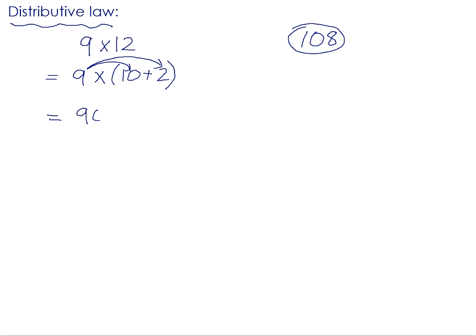So 9 times 10 is 90, and 9 times 2 is 18. We can now add the results of the product. 90 plus 18 is 108, and we get exactly the same answer as we had from what we know 9 times 12 to be.